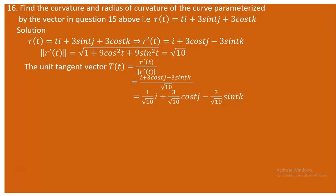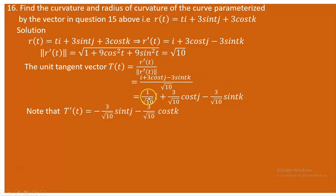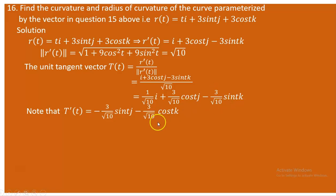The curvature κ is defined as the norm of T'(t) divided by the norm of r'(t). To find T'(t), we differentiate the components of T(t). The i-component is constant (1/√10), so its derivative is zero. The j-component gives -3sin(t)/√10, and the k-component gives -3cos(t)/√10.